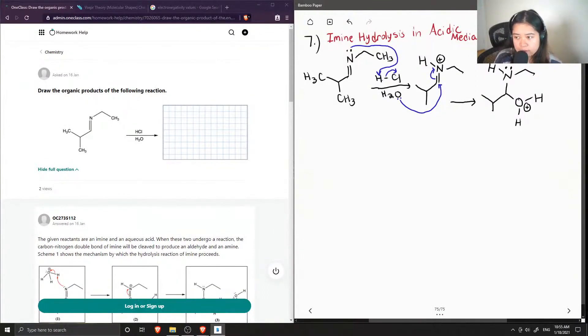So to relieve that positive charge, the lone pairs on the hydrogen will come in, take one of the protons, bringing electrons down to the oxygen.